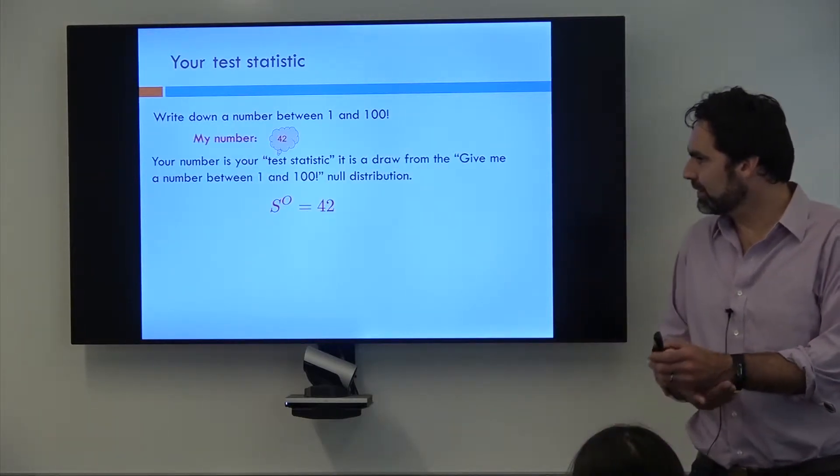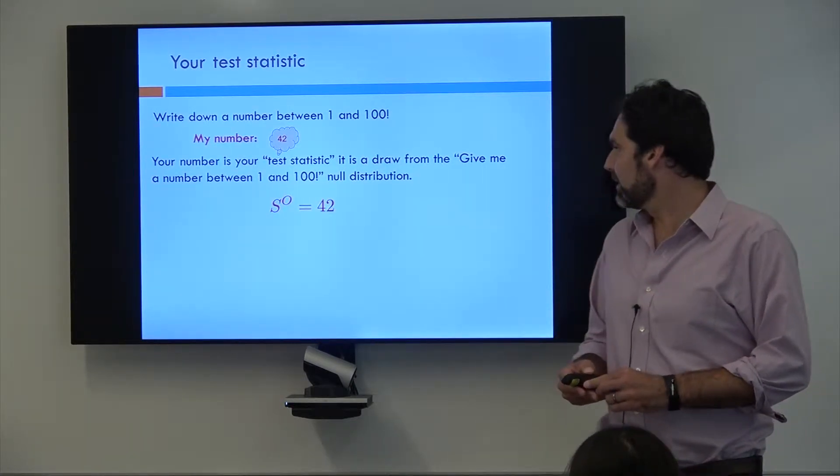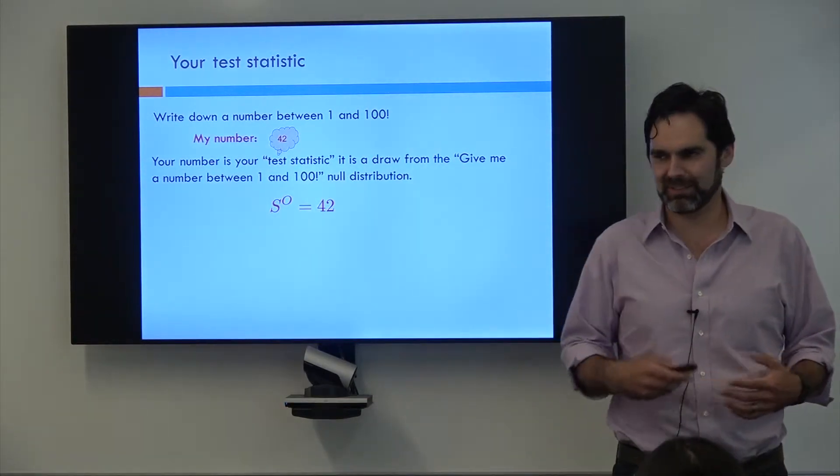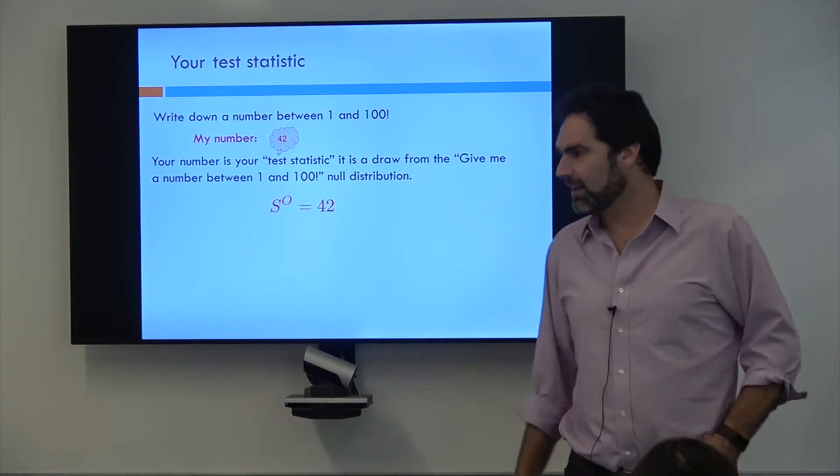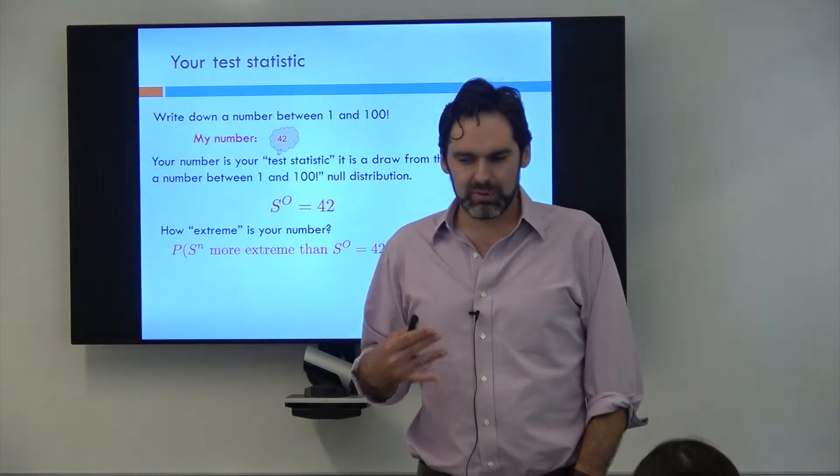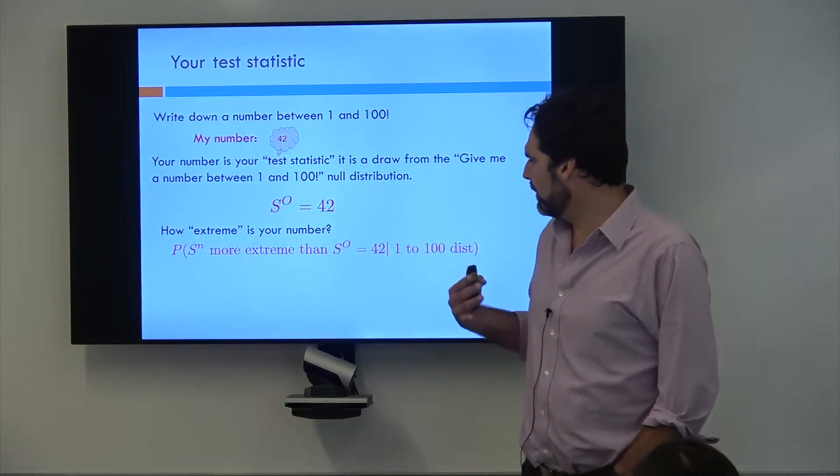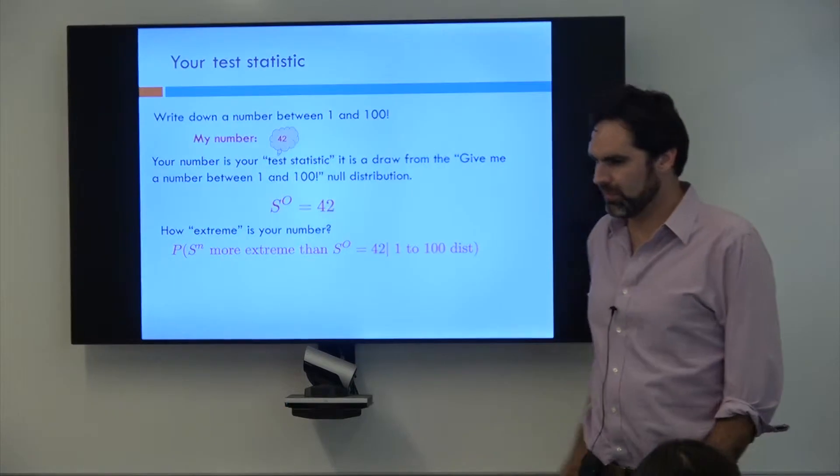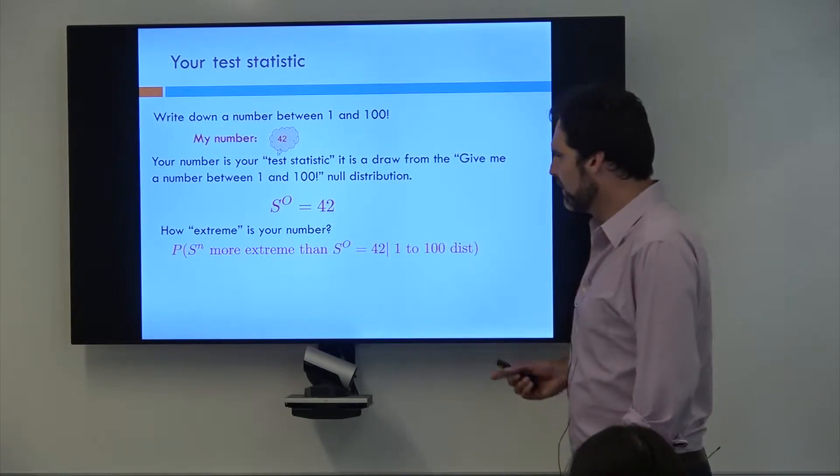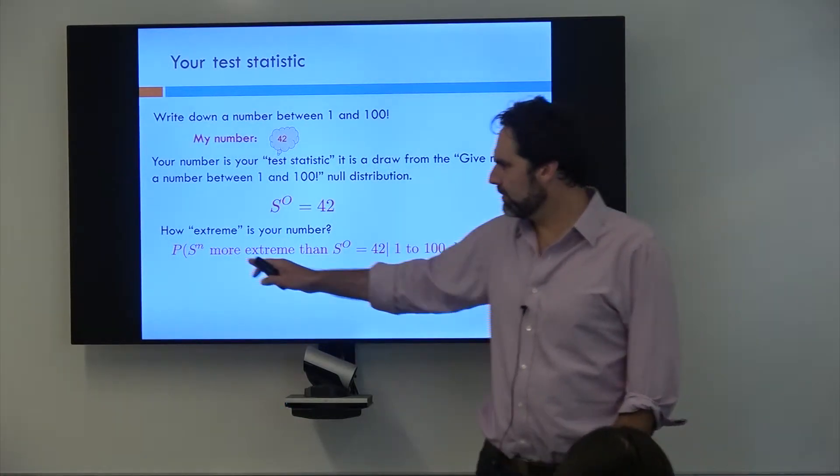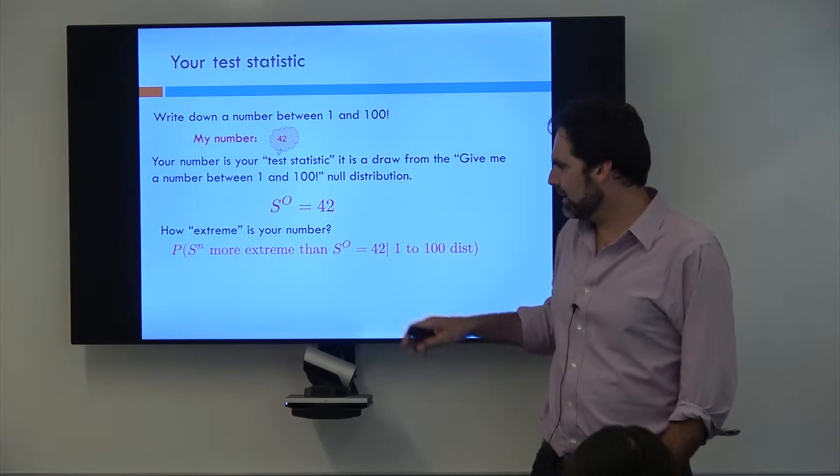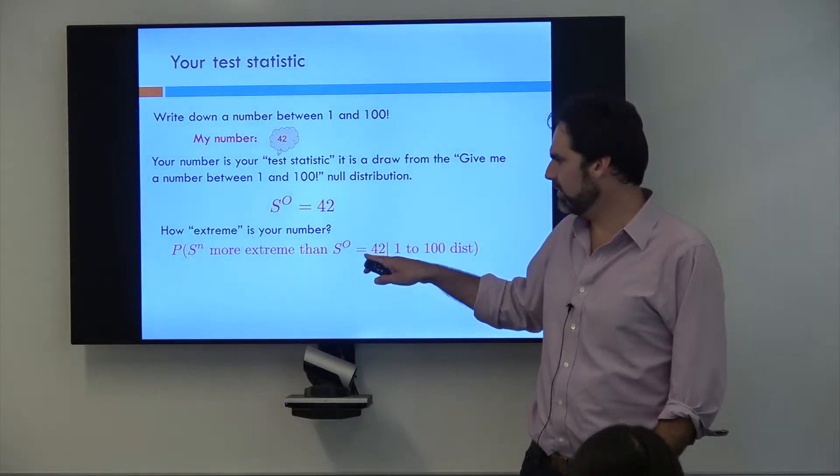Now your number is what we're going to call the test statistic and it is drawn, as I said, from this distribution of give me a number between 1 and 100. If we're going to do this a lot of times, people are just going to write numbers down and eventually it'll build up to some sort of distribution.